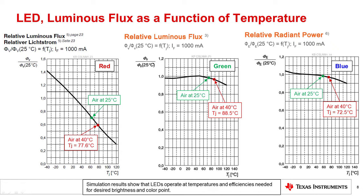These results, where junction temperatures are 77, 88 and 72 degrees Celsius, guarantee the desired brightness and color point would be achieved.